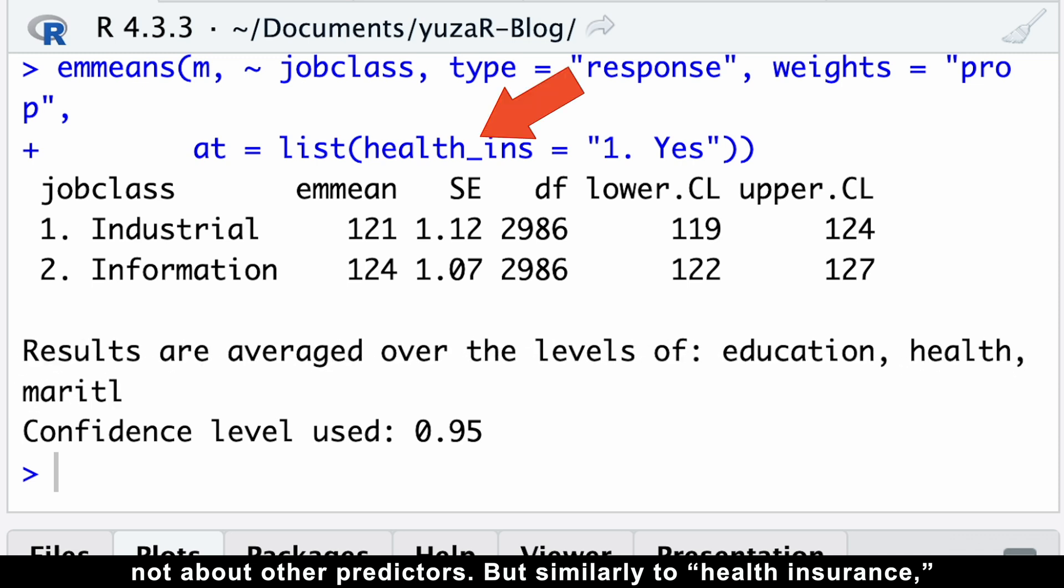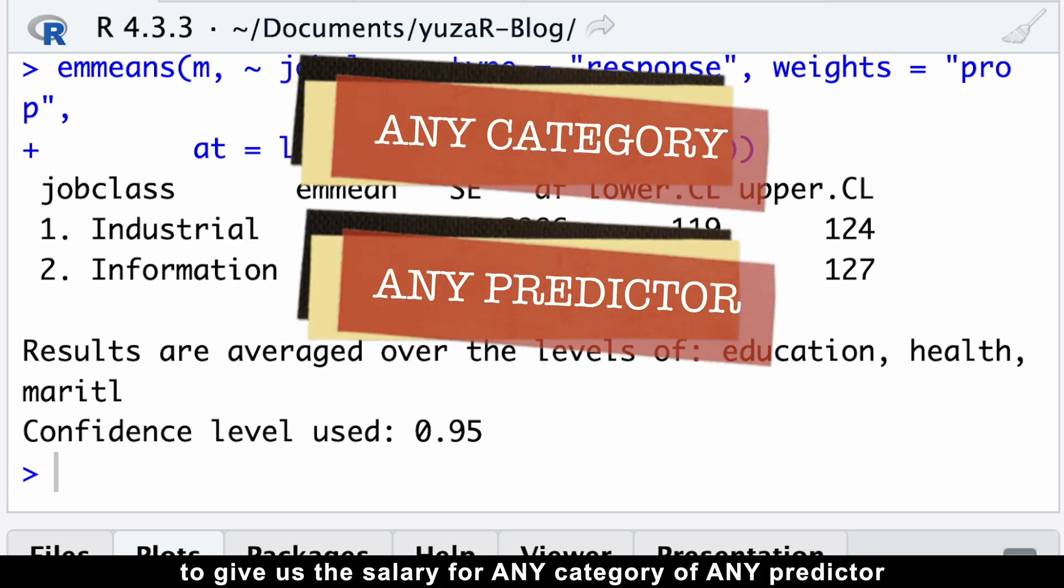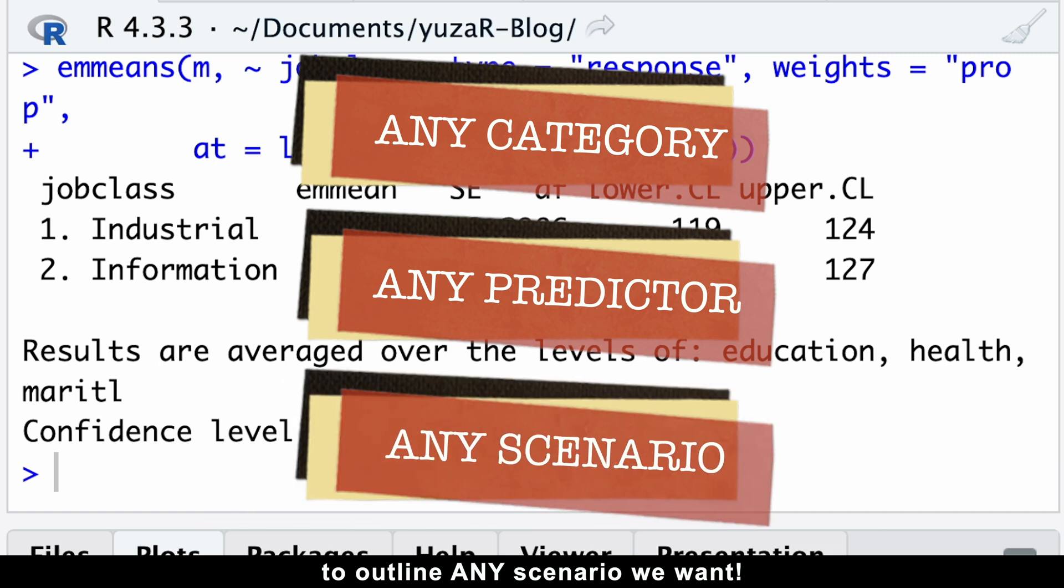But similarly to health insurance, using only the at argument, we can actually ask the model to give us the salary for any category of any predictor to outline any scenario we want.